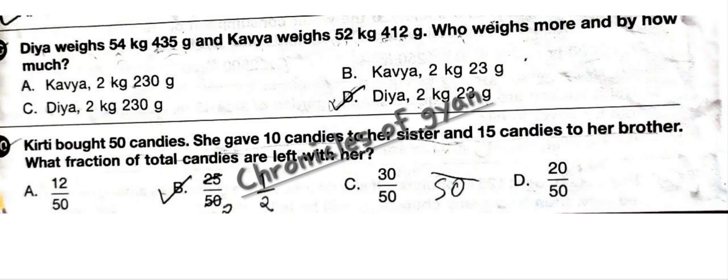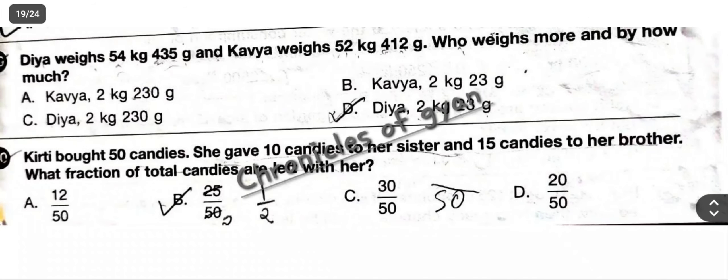Question 30: Kirti bought 50 candies. She gave 10 candies to her sister and 15 candies to her brother. What fraction of total candies is left with her? She gave away 10 + 15 = 25 candies. So 25 candies are left out of 50, which is 25/50. The answer is option B.